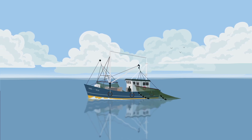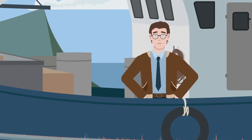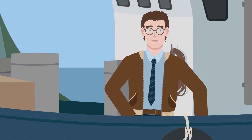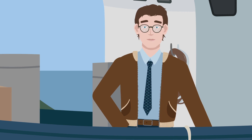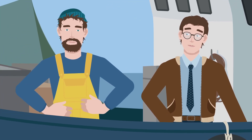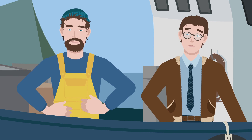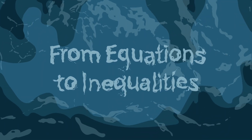Looks like fishing season has begun. Meet Wade. He's interested in protecting the fish population from overfishing, so they remain in our oceans forever. However, Wade's brother, Skeeter, earns a living from fishing, so he wants to catch as many as possible and hasn't bothered to learn the regulations. In order for Wade to help his brother understand the laws, he'll have to go from equations to inequalities.